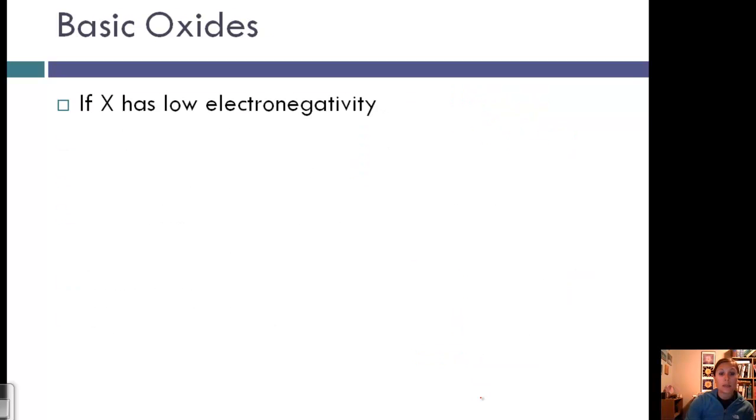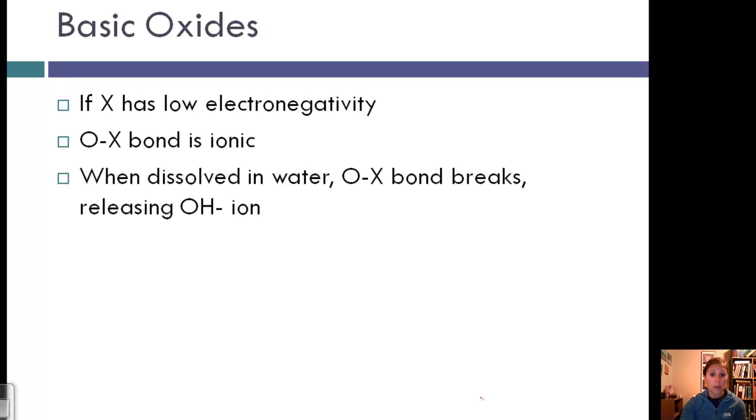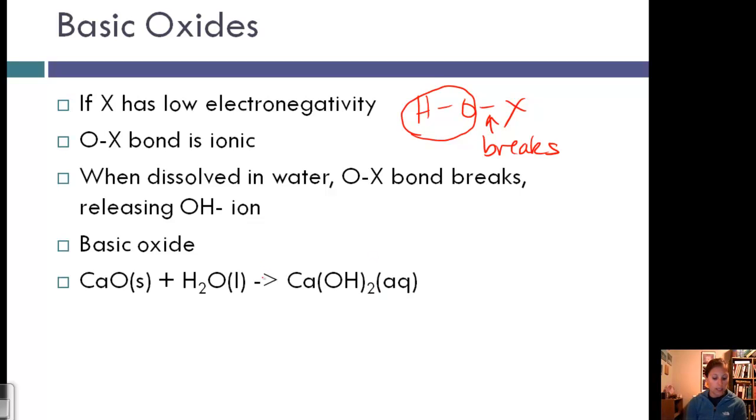Now let's look at basic oxides. If X has low electronegativity, the O-X bond is ionic and breaks apart in water. This releases the OH⁻ ion, producing a basic oxide. For example, calcium oxide plus water produces calcium hydroxide. We get hydroxides from this ionic oxide.